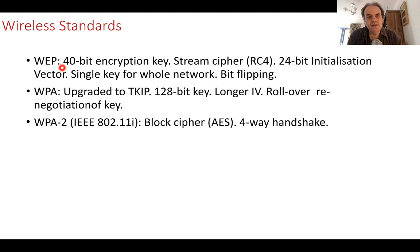WPA was a firmware upgrade between WEP and WPA2 and introduced TKIP which is a better cipher. WPA had a 128-bit key, a much longer initialization vector, and then there was a renegotiation of the keys before the IV rolled over. Then we saw a much better infrastructure with WPA2 or 802.11i that brought a block cipher such as AES and the four-way handshake.